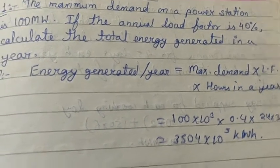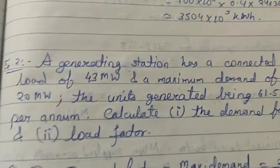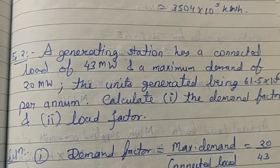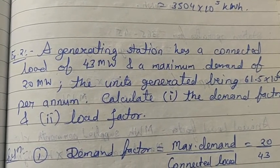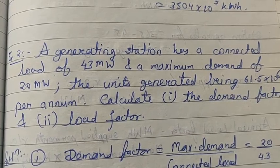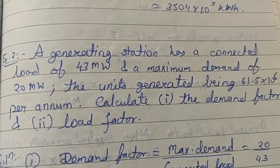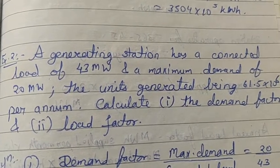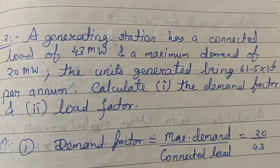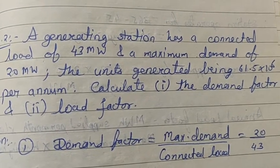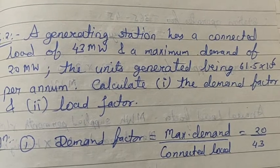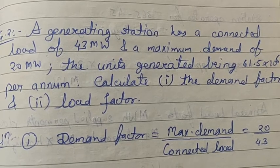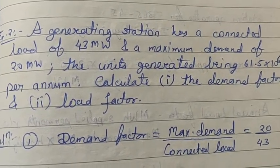That was a simple, formula-based numerical. Let's see one more numerical. A generating station has a connected load of 43 megawatt and a maximum demand of 20 megawatt — meaning it is connected to 43 megawatt but the demand is only 20 megawatt. Units generated per annum is 61.5 × 10⁶. So we have to calculate the demand factor and the load factor.